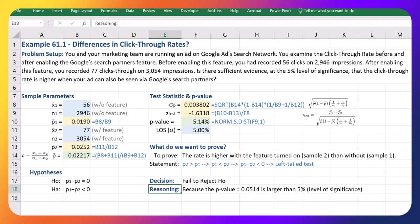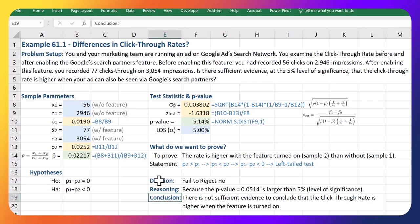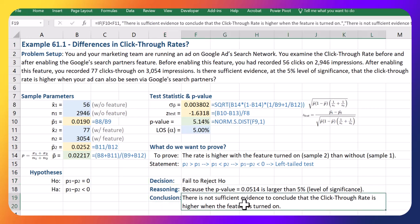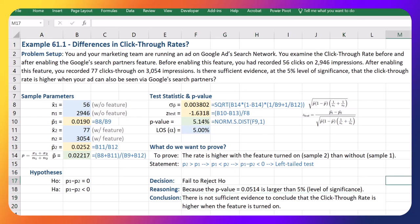Here is our conclusion: because we failed to reject H naught, we conclude that there is not sufficient evidence to conclude the click-through rate is higher when the feature is turned on. Very close here—this is really borderline. You might want to just increase your sample sizes if at all possible, look at this again a little bit. But yeah, as it stands with this five percent level of significance, we cannot say that the click-through rate is higher in the population where this feature is turned on at the five percent level of significance. That concludes this video. Thanks for watching.